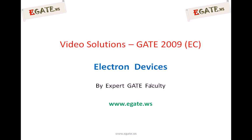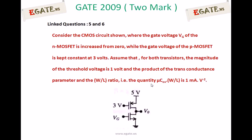Next we are discussing electron devices. This is the fifth question that appeared in GATE 2009. Consider the CMOS circuit shown below, where the gate voltage VG of the NMOSFET is increased from zero, while the gate voltage of the PMOS is kept constant at 3V.